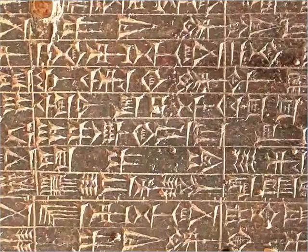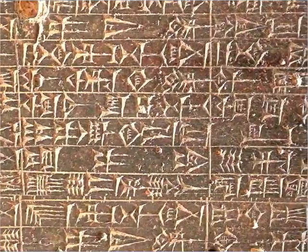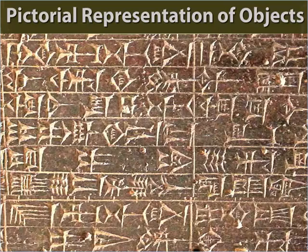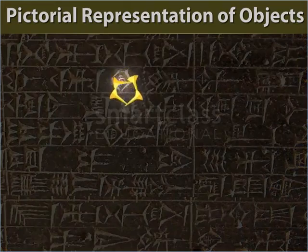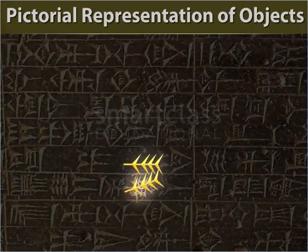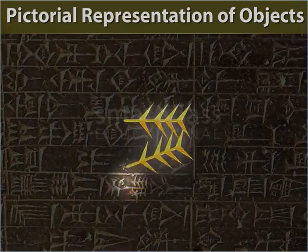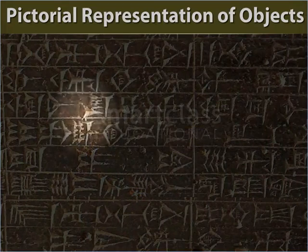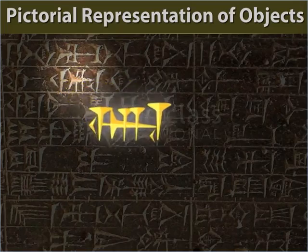At the very beginning, expressing thoughts involved the use of pictures of objects, or pictograms, to convey meaning. For example, the sun would be shown as a picture of the sun, or to explain a grain, a picture of grain would be shown. The pictorial representation evolved into unique characters by the Bronze Age.